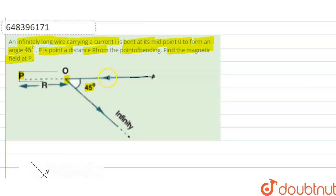But due to this bent wire it will be there, but we don't know the perpendicular distance between this bent wire and the point. So for this we will reconstruct this diagram.